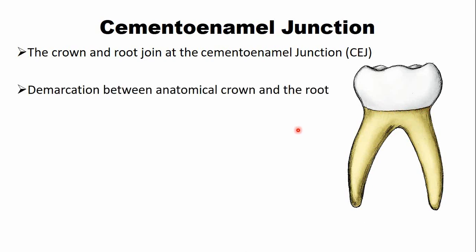In other words, the cementoenamel junction is a demarcation between the anatomical crown which is covered by enamel and the anatomical root which is covered by cementum. So it is a demarcation between the crown and the root. The cementoenamel junction is also known as cervical line.